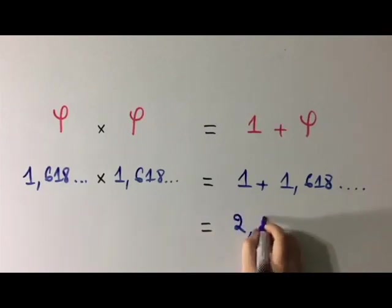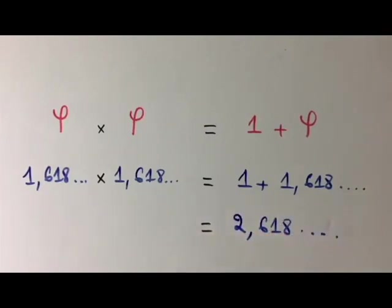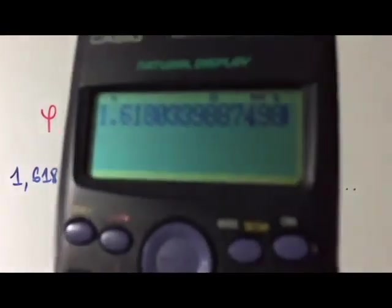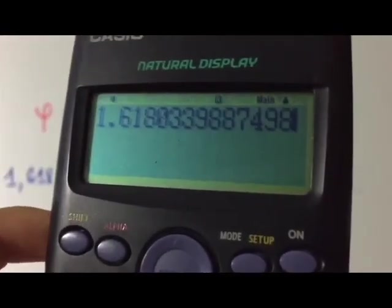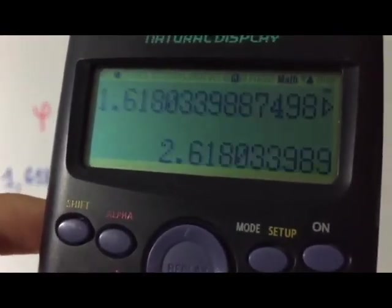And here's the proof: let's just multiply phi by itself and the result is 2.618.